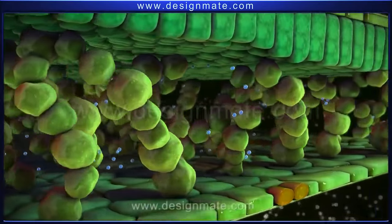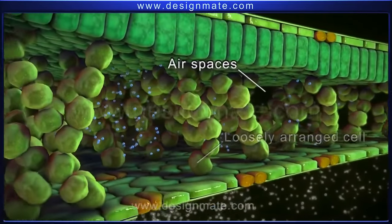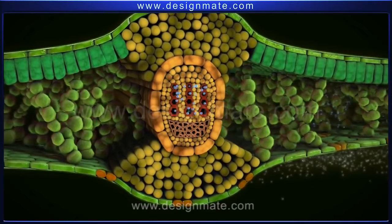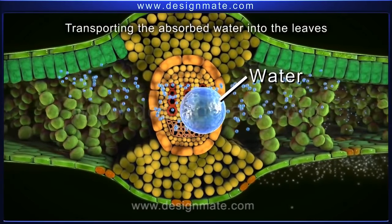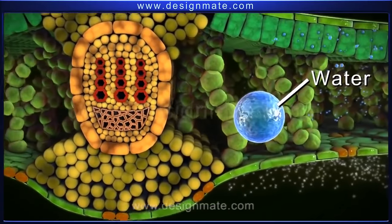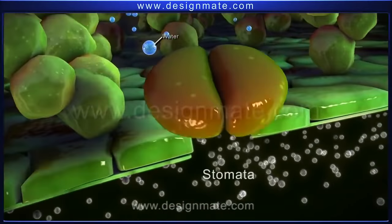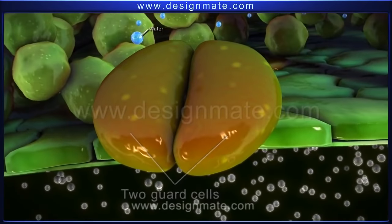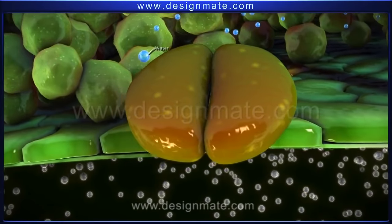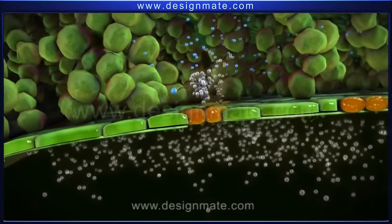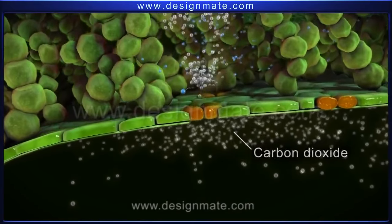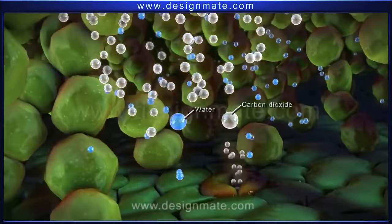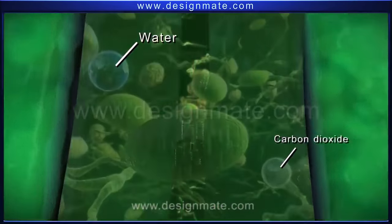The next layer has loosely arranged cells with large air spaces. The section also shows tubes specific for transporting the absorbed water into the leaves. The lower layer has many pores called stomata. Each stoma is surrounded by two guard cells, which regulate the opening and closing of the stomata.